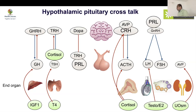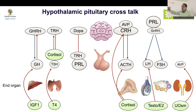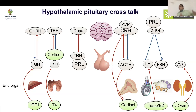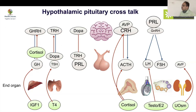In Cushing syndrome — whether pharmacological or endogenous — very high cortisol will suppress TSH, giving a picture of central hypothyroidism. This is not true central hypothyroidism; it is the effect of excess cortisol. So in high-cortisol states, low TSH should not be a concern from a thyroid perspective.